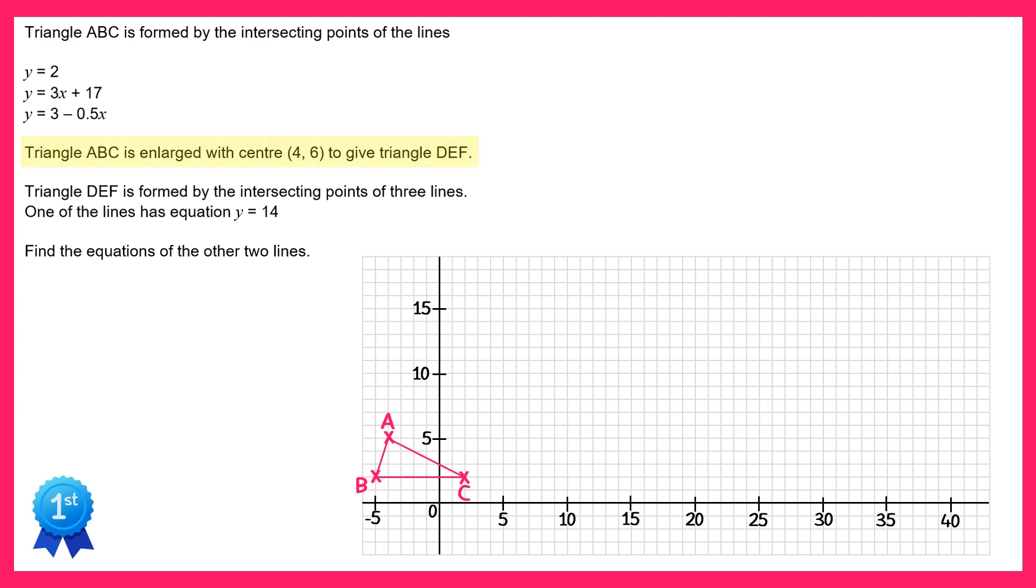Next we're told in the question that triangle ABC is enlarged with centre 4, 6 to give triangle DEF. So let's mark on the centre 4, 6. Now unfortunately we can't perform this enlargement because we're not told the scale factor of enlargement. We are told some other information though.